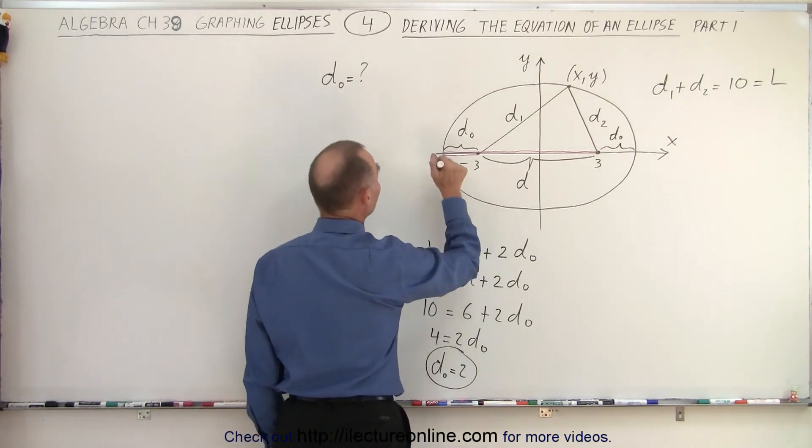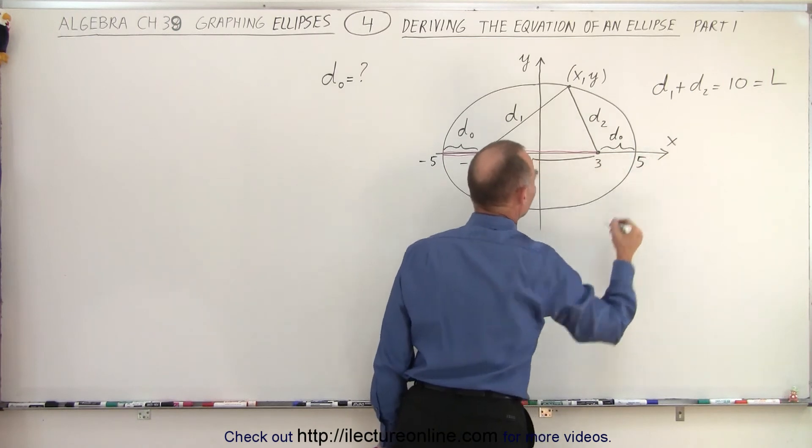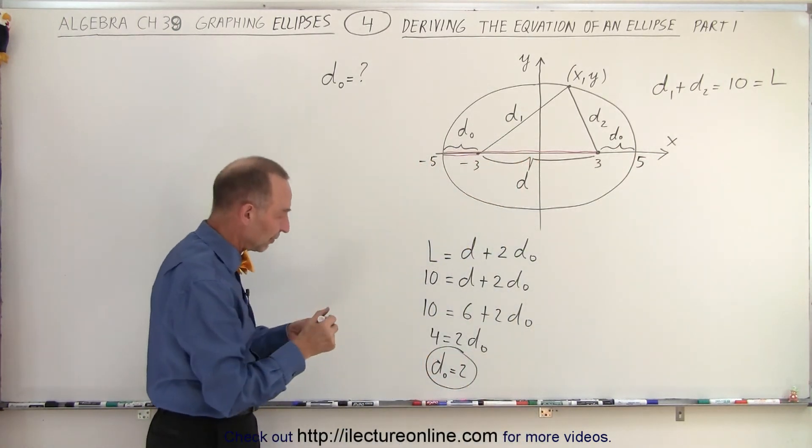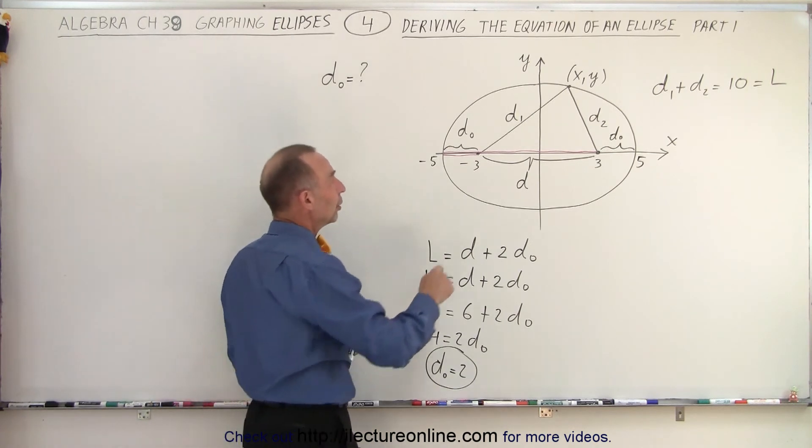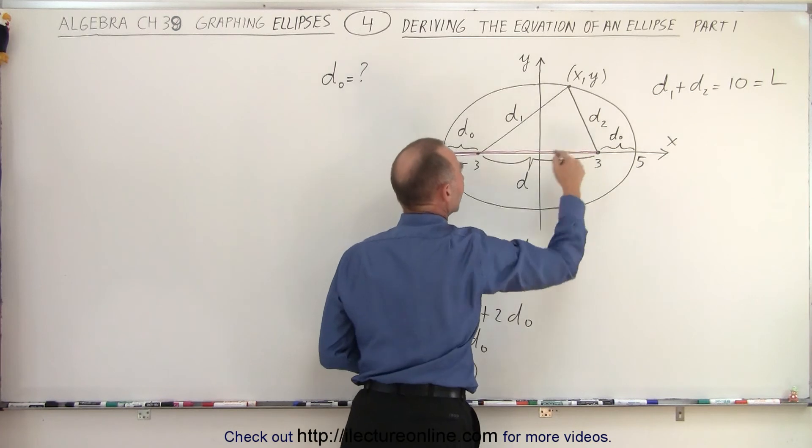So now that we know that that distance is equal to 2, if we subtract 2, we get to minus 5 over here. If we add to here, we get to plus 5 over there, which then shows us how to find the endpoints of the ellipse if we know the location of the foci and if we know the length of the string.